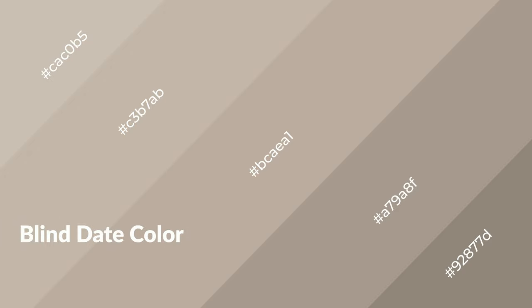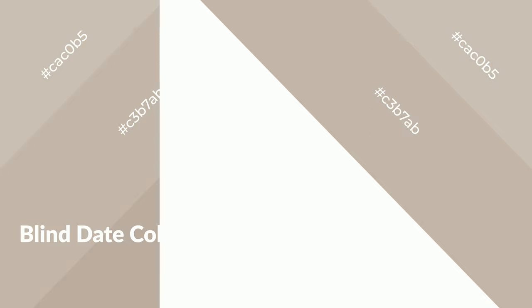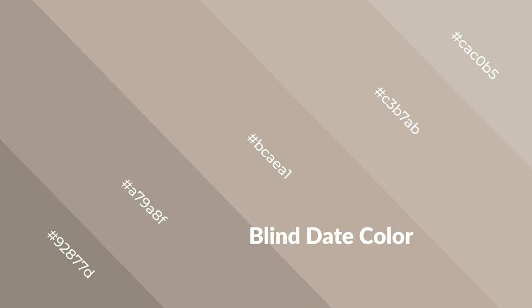Blind Date is a warm color, and it emits cozier and active emotion. Warm colors are symbols of warmth, fire, heat, and sunshine. It also evokes joy, passion, love, and even anger emotions. You can see them used in restaurants and gyms.